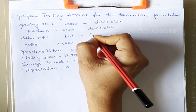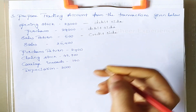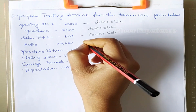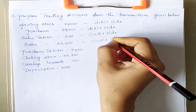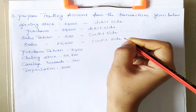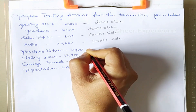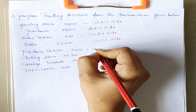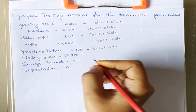Next is sales returns — we mention it on the credit side. We also have sales, which is also mentioned on the credit side. To get the net sales amount we need to deduct sales returns from sales. Next, purchase returns is mentioned on the debit side, and to get net purchases we deduct purchase returns from purchases.